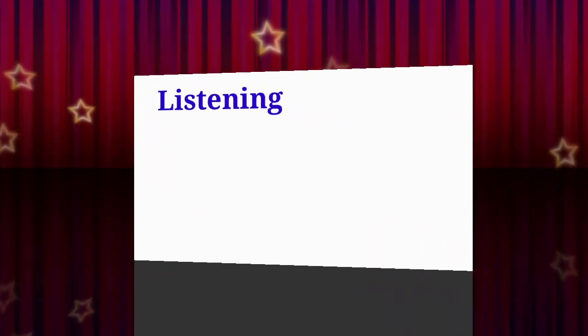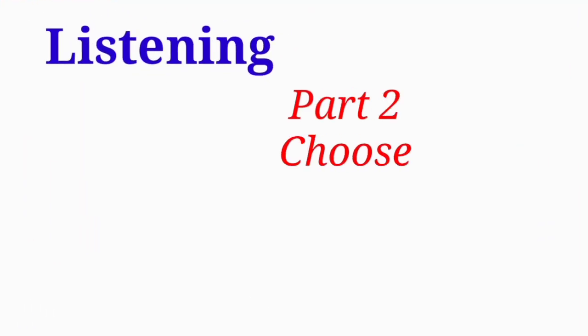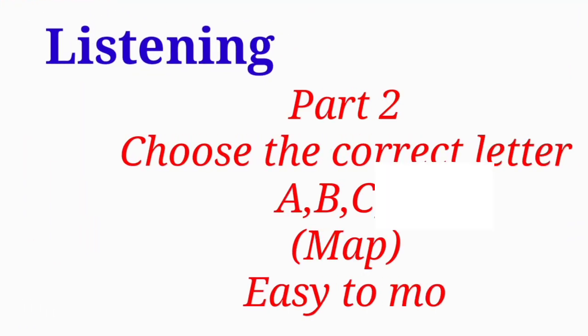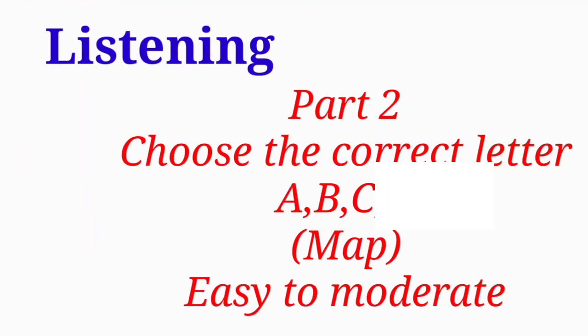In Listening Part 2, you can get a choose-the-correct-letter type of question. You'll need to choose one letter from A, B, or C. The statements will be simple and short, and the answers will also be fairly short, so you can easily get the answers. There is also a good possibility of a map question, so prepare for map-based questions too.